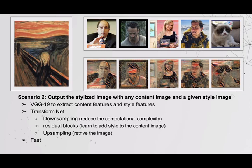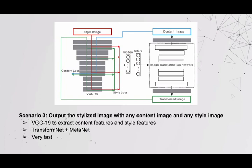But what if our users want to use their own style? Then they would have to wait two hours to train the network. Or we can train a meta-network to generate weights for the transfer network, and then use that network to produce the stylized image.